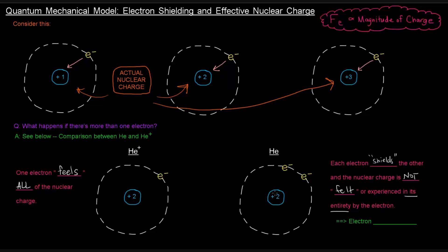And what happens is that the nuclear charge is not felt or experienced in its entirety by the electron. So it's kind of like this nuclear charge is being dispersed between the two, as opposed to pulling on each of them with its entirety. So this concept is called electron shielding.